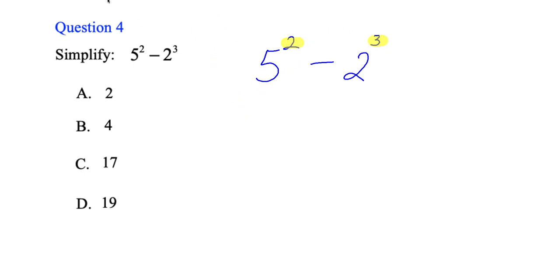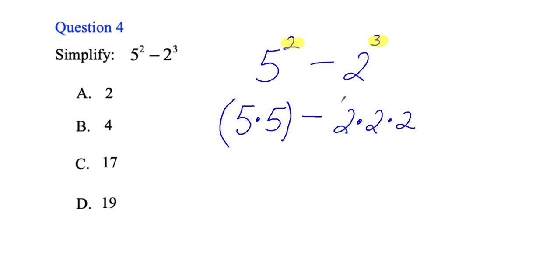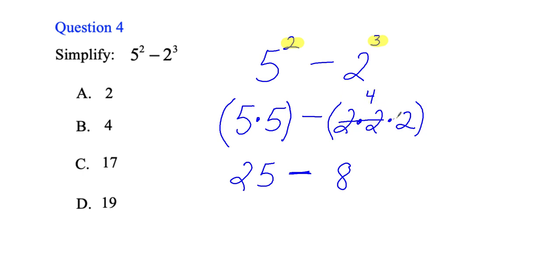Five squared means five times five. Two cubed means two times two times two. What's five times five? Twenty-five. What's two times two times two? Two times two is four, and four times two is eight. Now I go 25 minus 8 and we get 17. So my final answer is C.